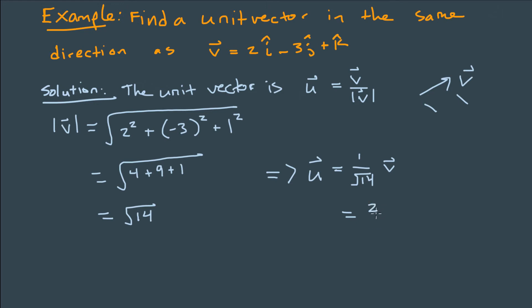So the answer is going to be 2 over square root of 14, i hat, so that's the x component, minus 3 over square root of 14, j hat, plus 1 over square root of 14, k hat.